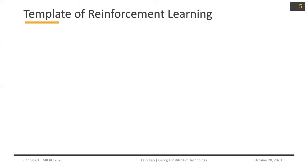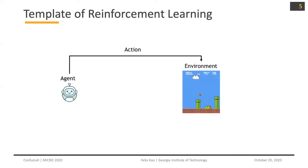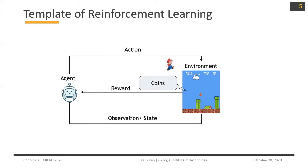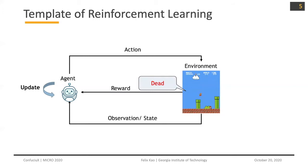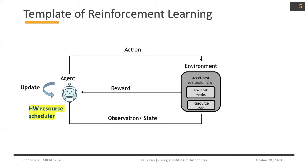Let's look at how general reinforcement learning works. You have an agent and an environment. The agent will make some action and get the reward from the environment, make an observation, and do another action. This repeats until the environment terminates and the agent updates its policy. Casting this to hardware resource assignment, our agent becomes the hardware resource scheduler and our environment becomes the accelerated cost evaluation environment.